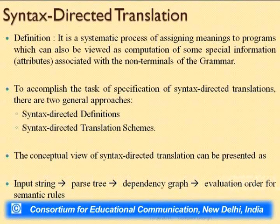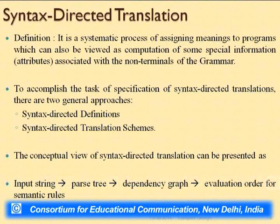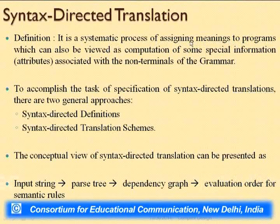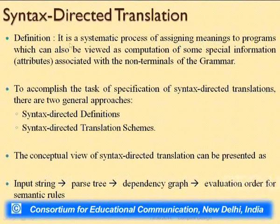We call this process syntax-directed translation. It is a systematic process of assigning meanings to programs, which can also be viewed as computation of some special information — known as attributes — associated with the non-terminals of the grammar. This may initially seem complex, but it is straightforward: we want to find the meaning of our program sentence by sentence, and to do that we assign meanings in terms of attributes.